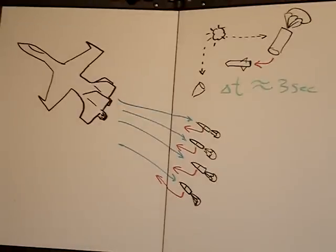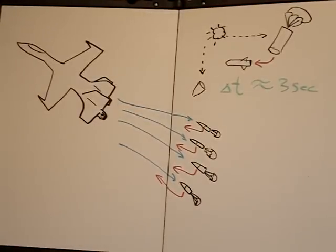So the change in time is about three seconds. That's what I wrote there. Delta T about three seconds. That's what I think. It could be longer or less.